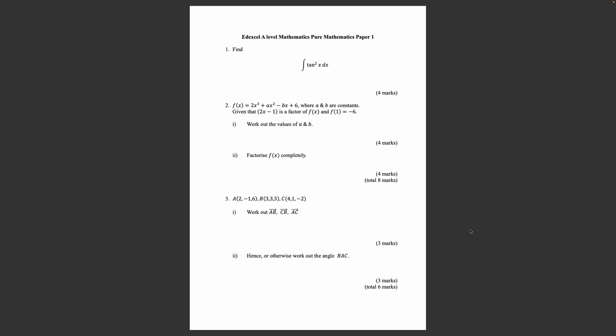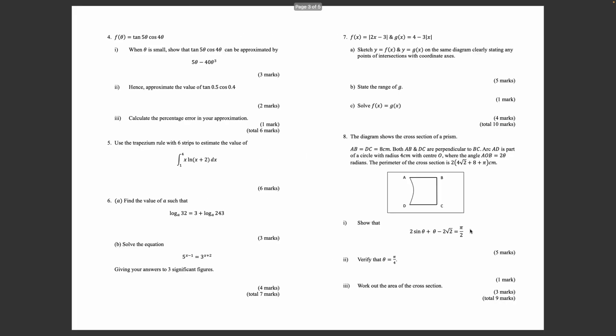Question 3: Point A(2, -1, 6), point B(3, 3, 3), point C(4, 1, -2). Work out the vectors AB, CB, and AC. Hence or otherwise, work out the angle BAC. Question 4: f(θ) = tan(5θ)cos(4θ), where θ is small. Show that tan(5θ)cos(4θ) can be approximated by 5θ - 40θ³. Hence, approximate the value of tan(0.5)cos(0.4).